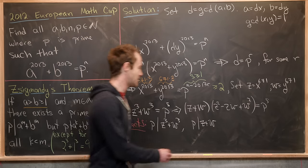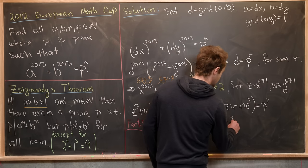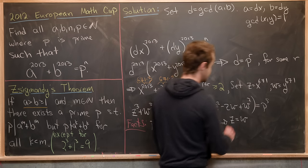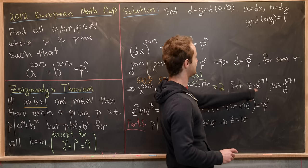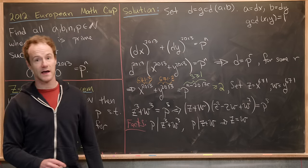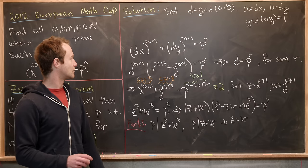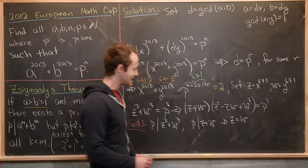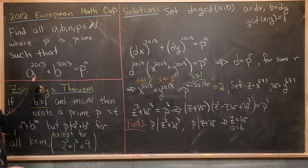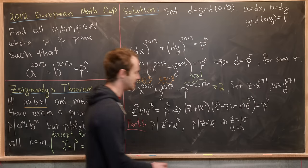Or in our current setup, z must be equal to w. So we have z is equal to w. But if z is equal to w, that means x is equal to y. But then if x is equal to y, that means a is equal to b. But then if a is equal to b, that means we have an even number on the left hand side, which means that p is equal to two.